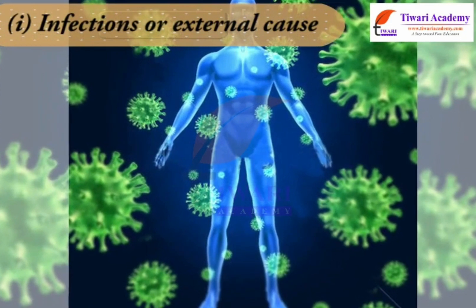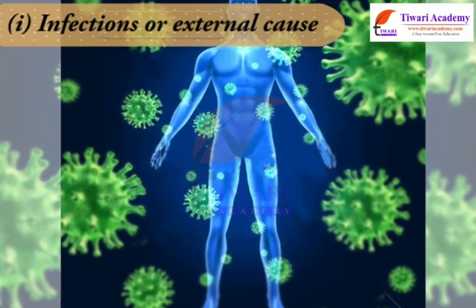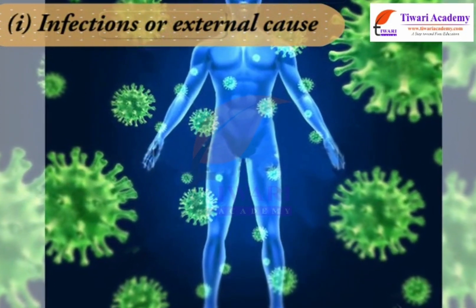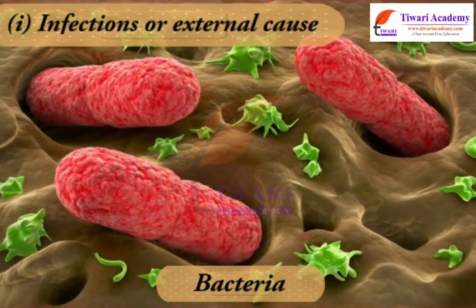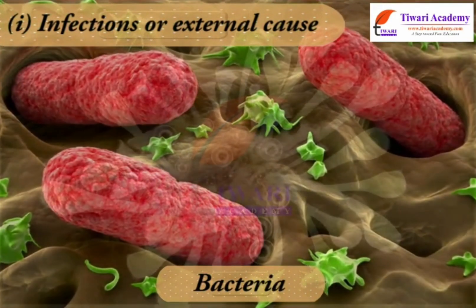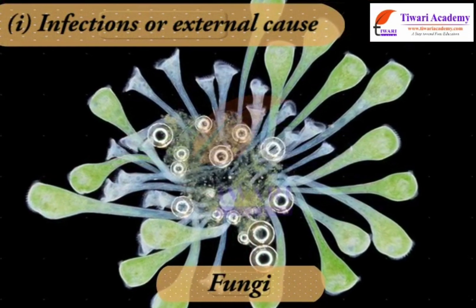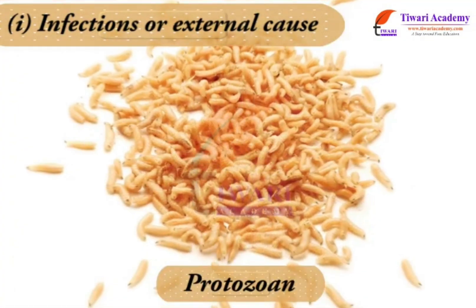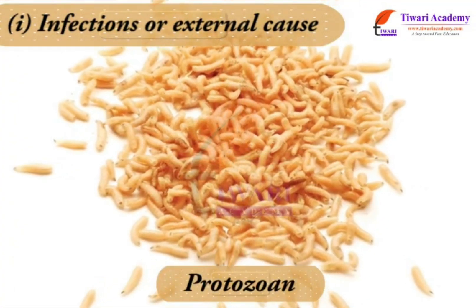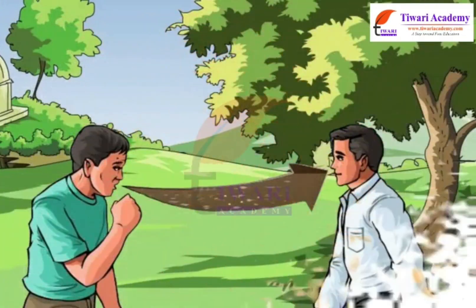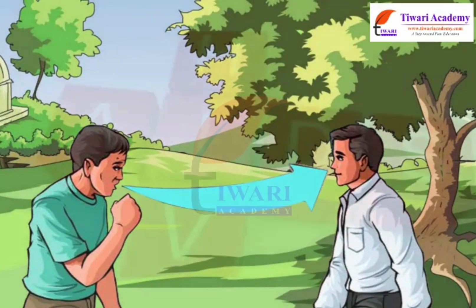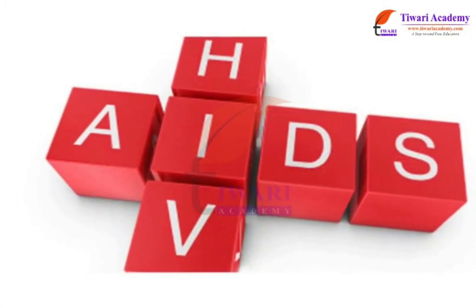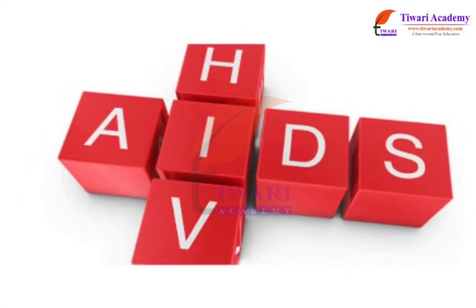The main factor that causes infectious disease is pathogens — namely viruses, bacteria, fungi, protozoa, worms, etc. They readily spread from infected to healthy persons by various means. Some infectious diseases like AIDS are fatal.